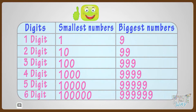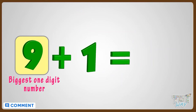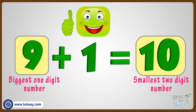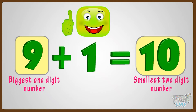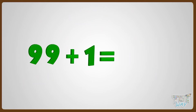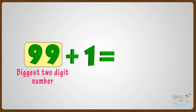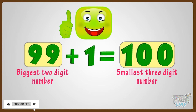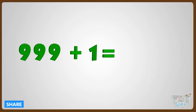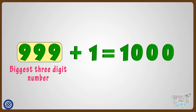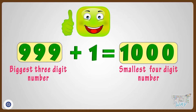Kids, if you add 1 to the biggest one-digit number, you get the smallest two-digit number. 9 plus 1 gives us 10 — 9 is the biggest one-digit number, and adding 1 gives the smallest two-digit number. Similarly, if we add 1 to 99, we get 100, the smallest three-digit number. And if we add 1 to 999, the biggest three-digit number, we get 1,000, which is the smallest four-digit number.